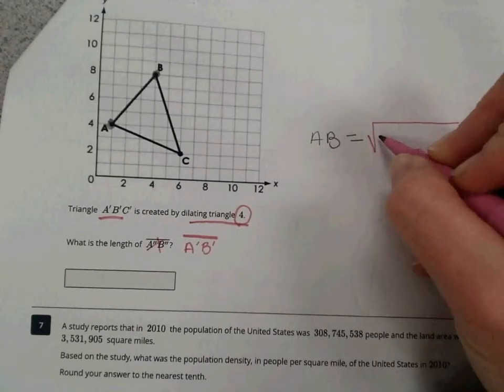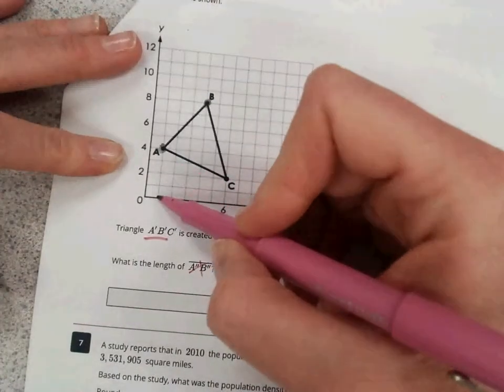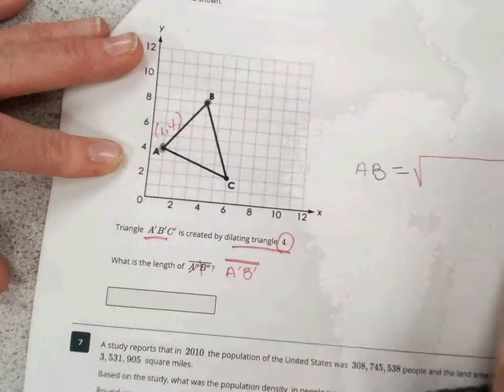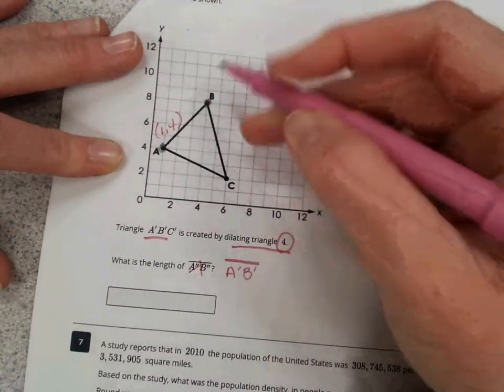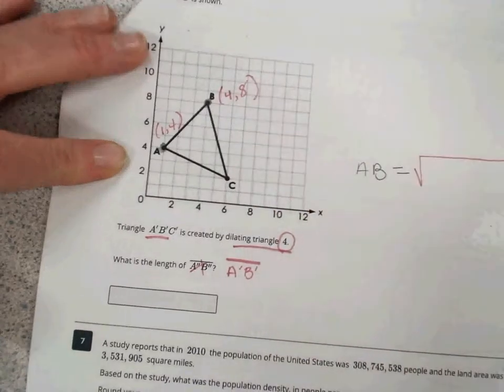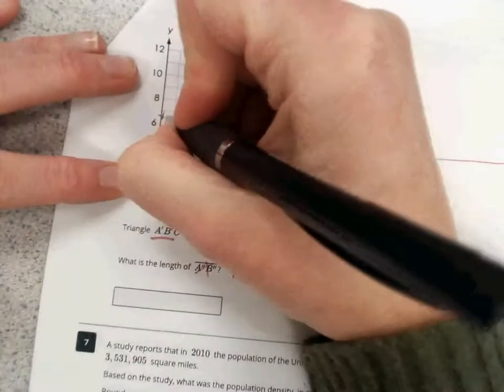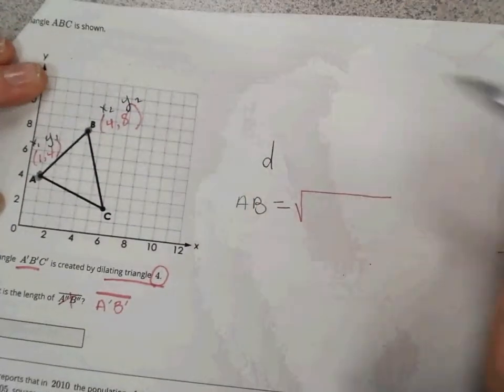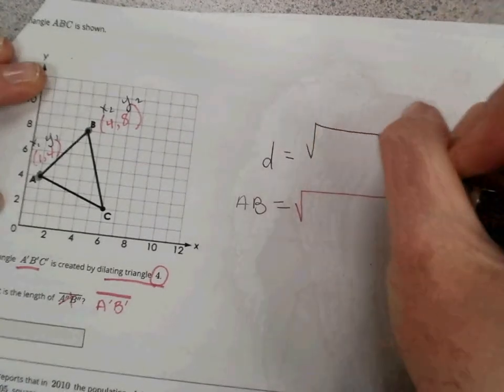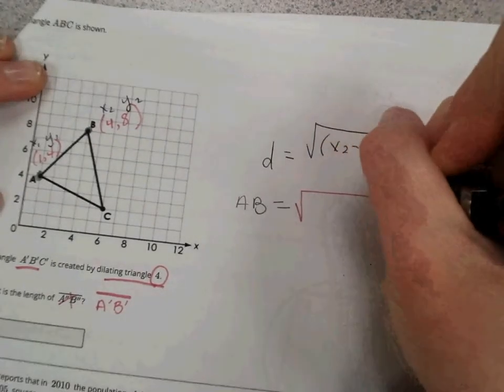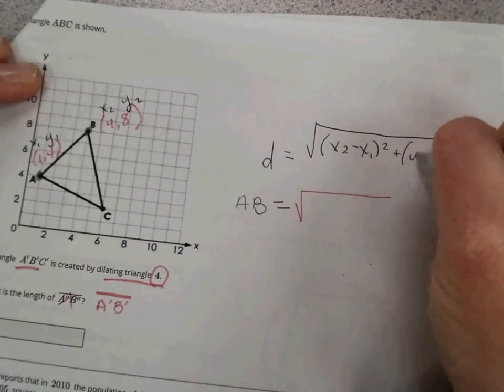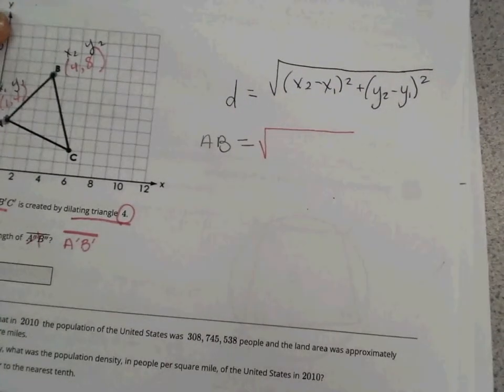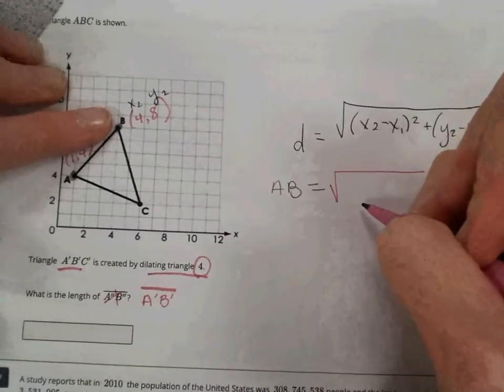Let's figure out these ordered pairs. There's one, it looks like 1, 4 for A, and for B, it looks like 4, 8. So, I can label those as X1, Y1, and X2, Y2. So, I'm going to plug those into my, not a bad idea to just go ahead and write that distance formula down right on your paper. So, now, as I calculate it, it's very easy to reference.